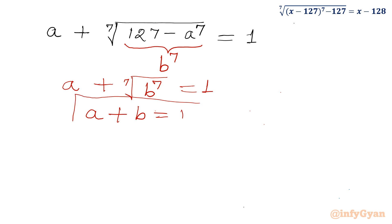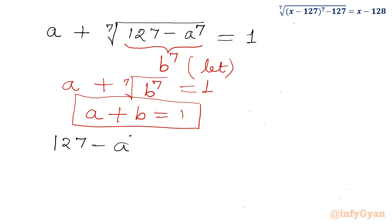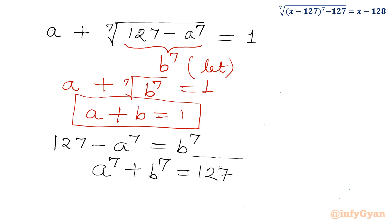This is our equation number 1. Now we have to write equation number 2 from our substitution. From the second substitution, a power 7 plus b power 7 equals 127. This is our equation number 2.